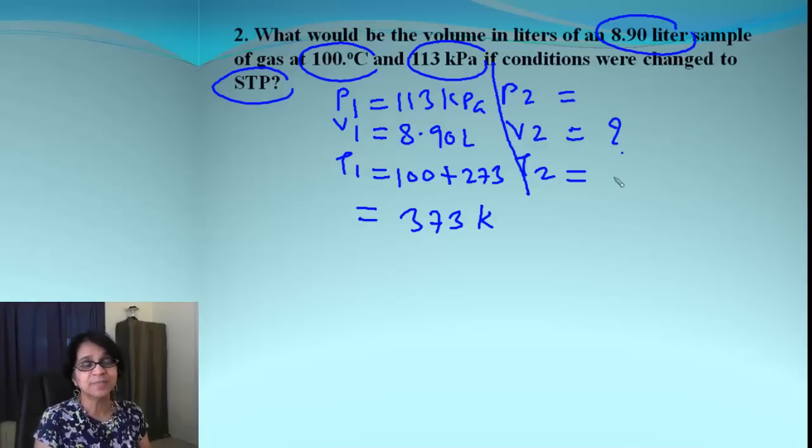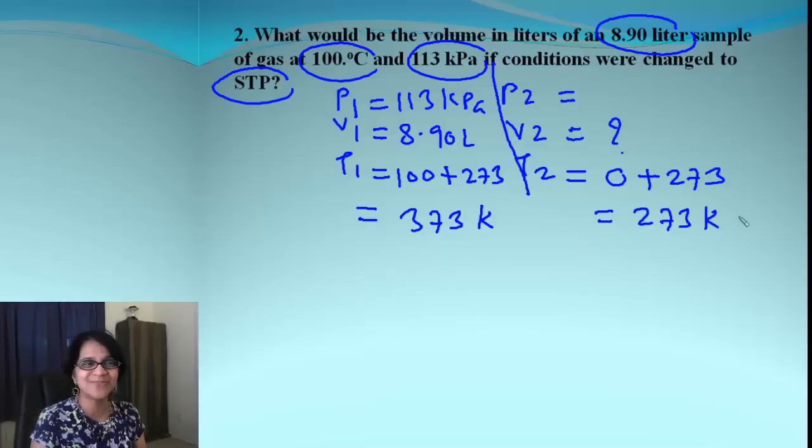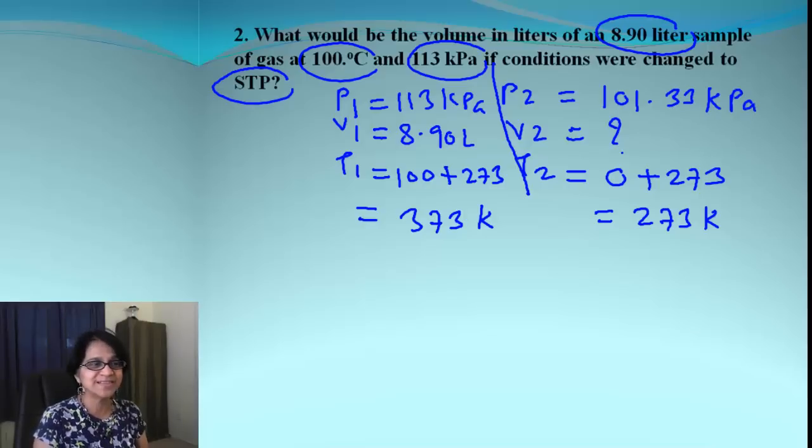We need to find out second volume which we have. For STP, the temperature is 0 degrees Celsius or when we add 273, it is 273 Kelvin. And pressure is 1 atmosphere. Or if you know, remember, if you have to convert that into kilopascal, the equation tells you it's 101.33 kilopascal. And once we find out, it's simply plug and check with the formula.